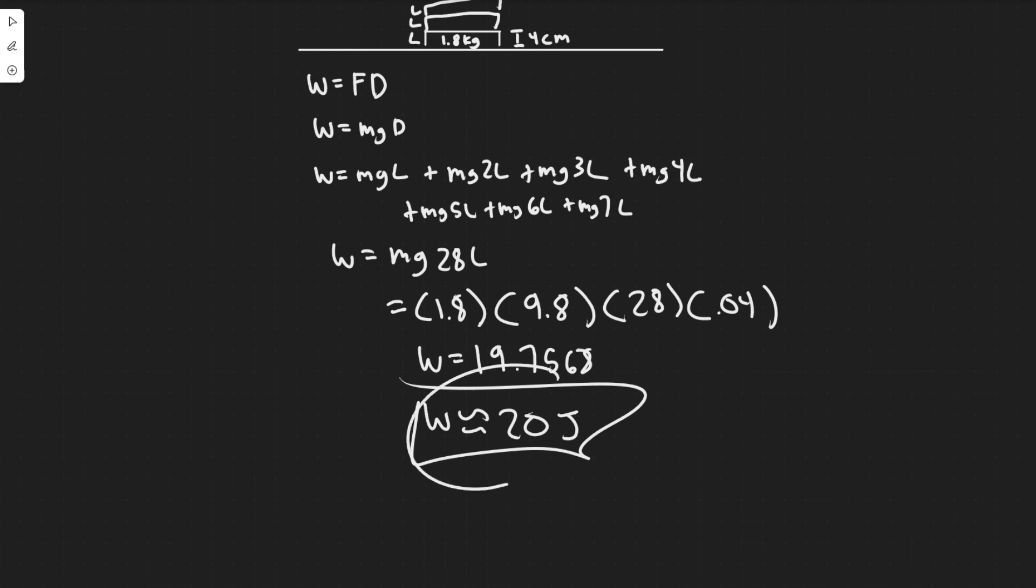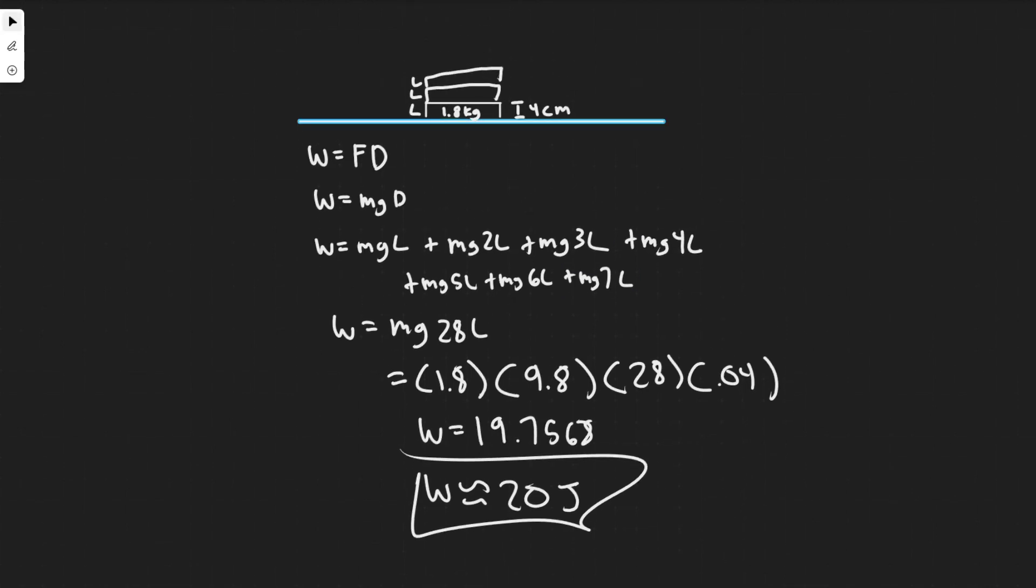Yeah, so basically this is going to be the total amount of work. We just added each book, how much it took for each book. So 20 joules is going to be your answer, and hopefully you found this useful.